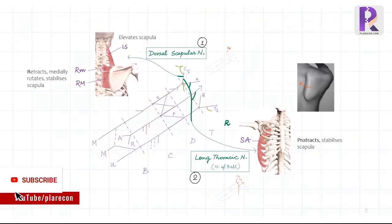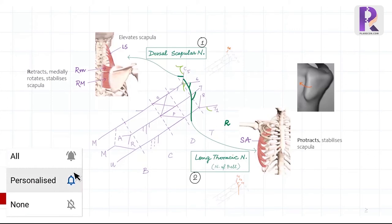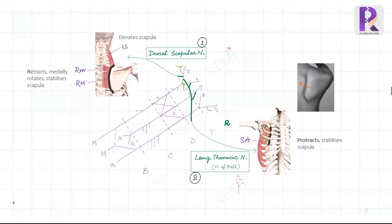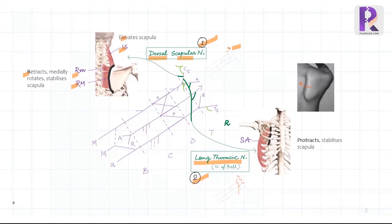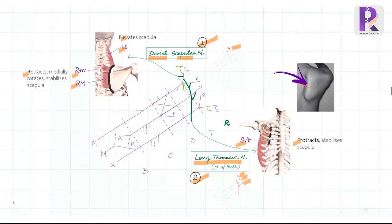Now let's look into these two side branches of the roots in further detail. They both supply muscles which act on the medial border of the scapula. The first branch of the brachial plexus is the dorsal scapular nerve, originating from the C5 nerve root. It supplies the levator scapulae, which elevates the scapula, and the rhomboids minor and major, which retract and medially rotate the scapula — remembered by R for R. The second side branch is the long thoracic nerve, or nerve of Bell, originating from C5, C6, C7 nerve roots, supplying the serratus anterior which protracts and stabilizes the scapula. In serratus palsy, winging of the scapula is due to unopposed retraction by the rhomboids.